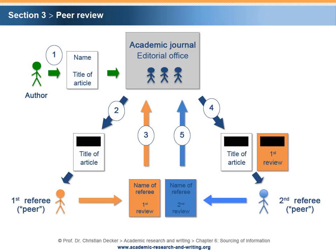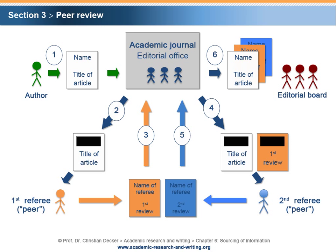If the second review is positive, the editorial office of the academic journal forwards the article, the first review, and the second review to the editorial board, which decides whether and when the article will be published in one of the upcoming issues of the journal. Due to the fact that the names of the author and first referee are anonymous, the process is called a double-blind peer review. The intention of the process is to achieve a high degree of impartiality.